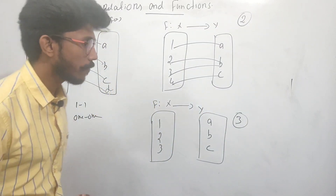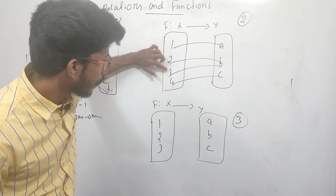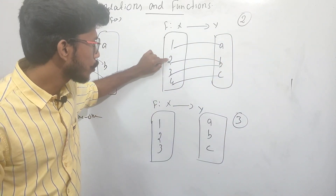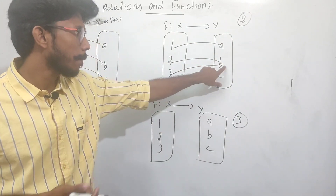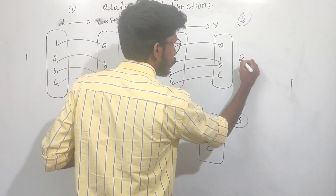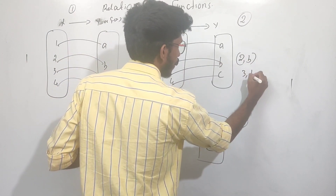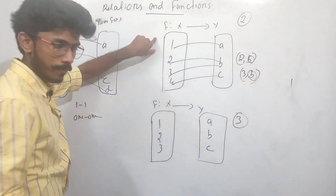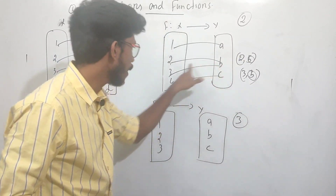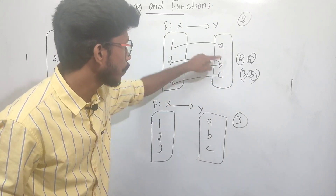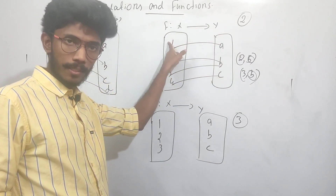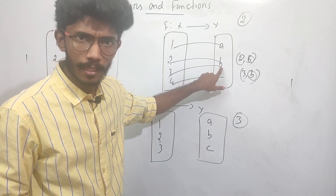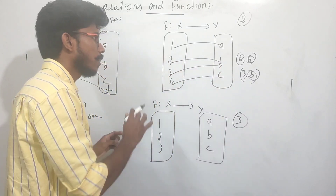You can get a function where all images are the same. For example, 2→B and 3→B: x is different but y is the same. This is the image and this is the pre-image. 2's image is B, 3's image is B.